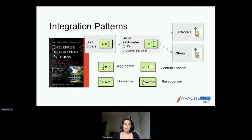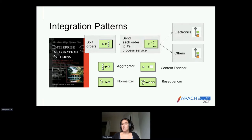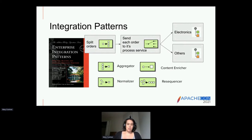When we talk about integration patterns, here's an example: an order submitted from an order management system gets split up by order item, and each item is sent to the appropriate place to be processed — whether that's electronics or some other area. Other examples include aggregating things back together, enriching something, re-sequencing it, etc. All of the enterprise integration patterns are based on the book written by Gregor Hohpe and Bobby Woolf called 'Enterprise Integration Patterns.'